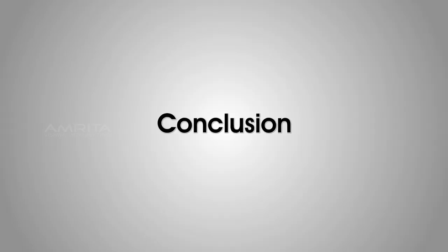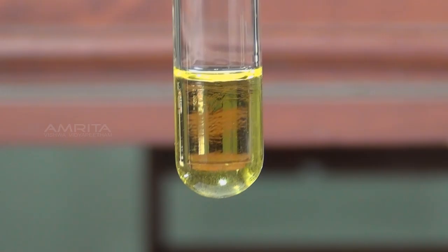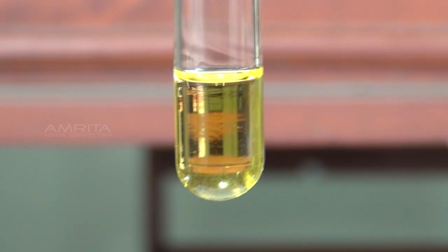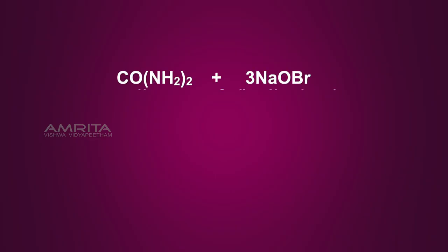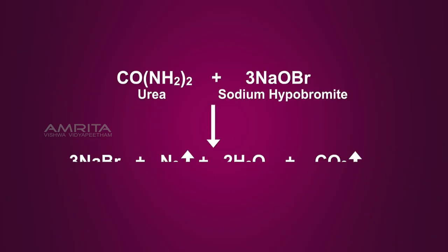Conclusion: When urea reacts with sodium hypobromite solution, which contains excess of sodium hydroxide, carbon dioxide and nitrogen gases are evolved.